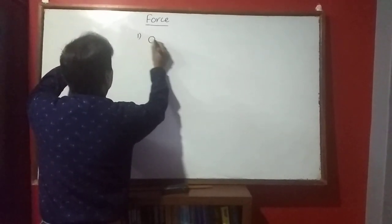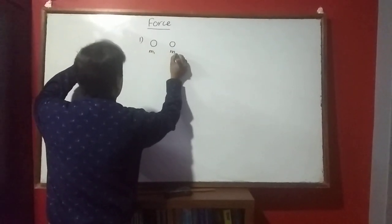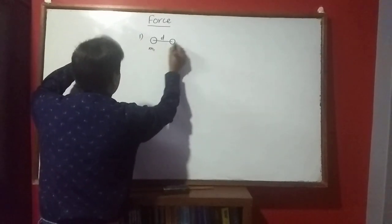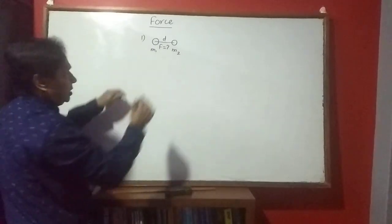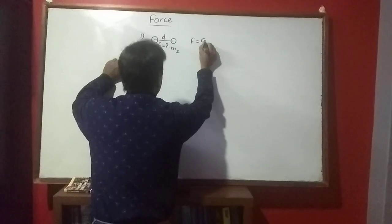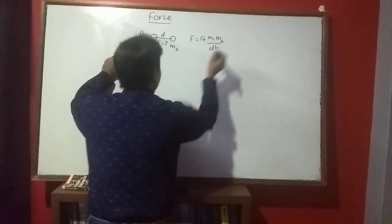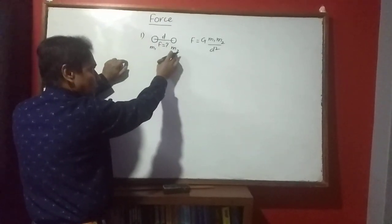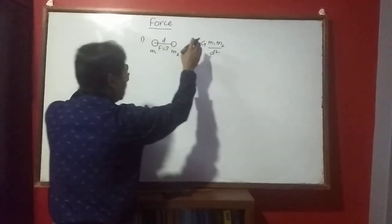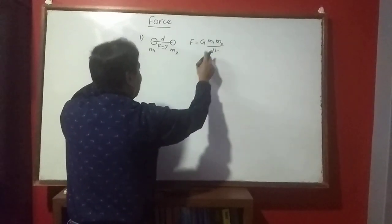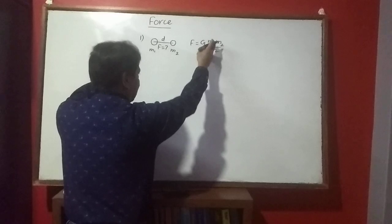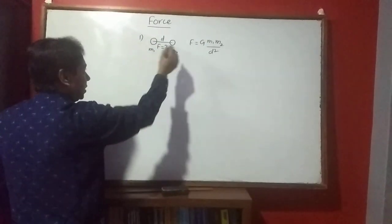Look at the first equation. If you have two bodies — one having mass m₁ and another having mass m₂ — separated by a distance d, and you are asked to find the gravitational force F between them, you can use: F = G·m₁·m₂ / d². Out of the five physical quantities, if four are given, the fifth can be calculated.